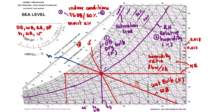The next property is specific volume. The units of specific volume are cubic feet per pound, which is essentially the inverse of the density of air. All the corresponding lines for specific volume are shown here on the chart.